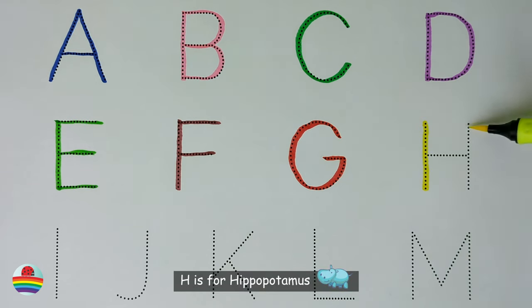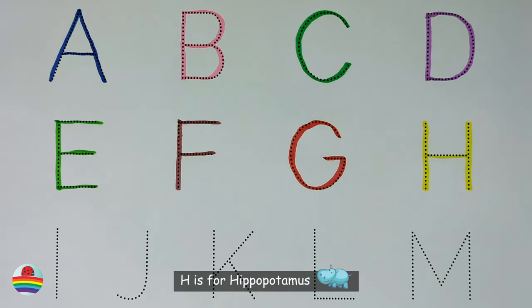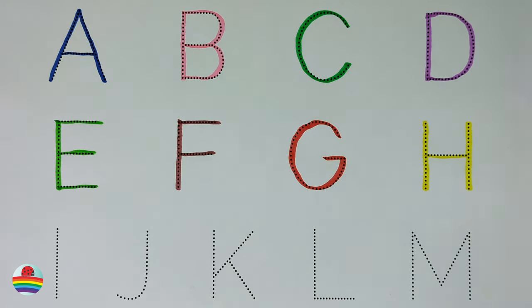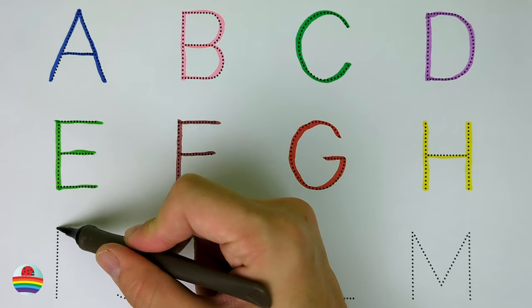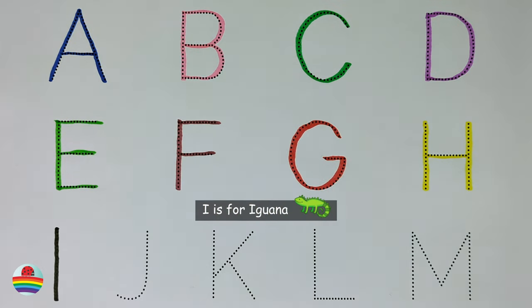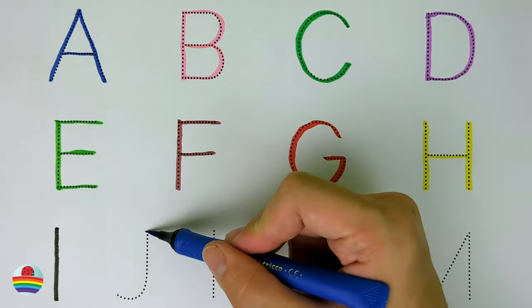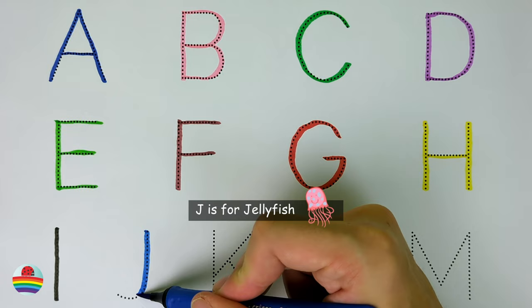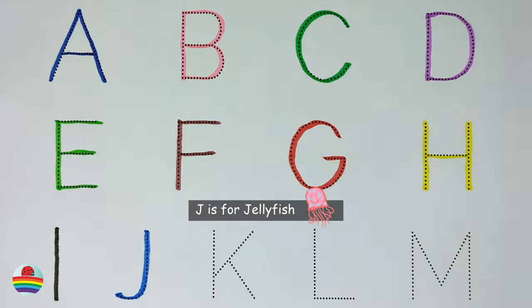H. H is for Hippopotamus. H. I. I is for Iguana. I. J. J is for Jellyfish. J.